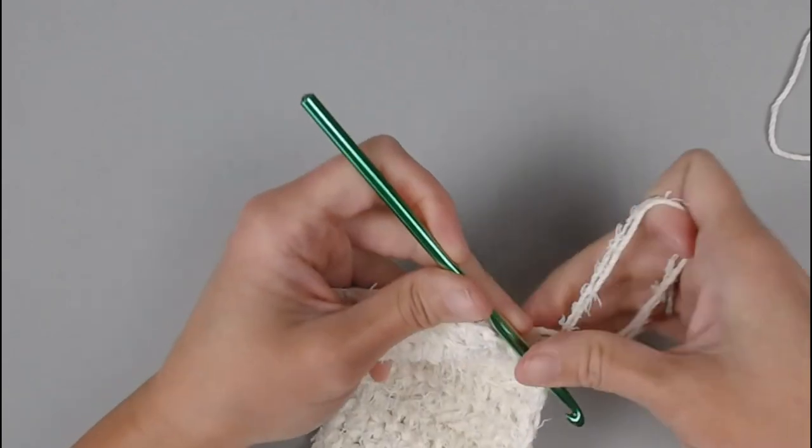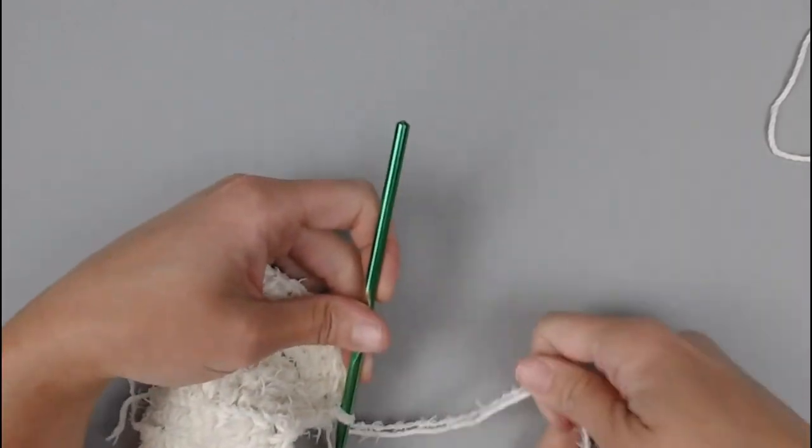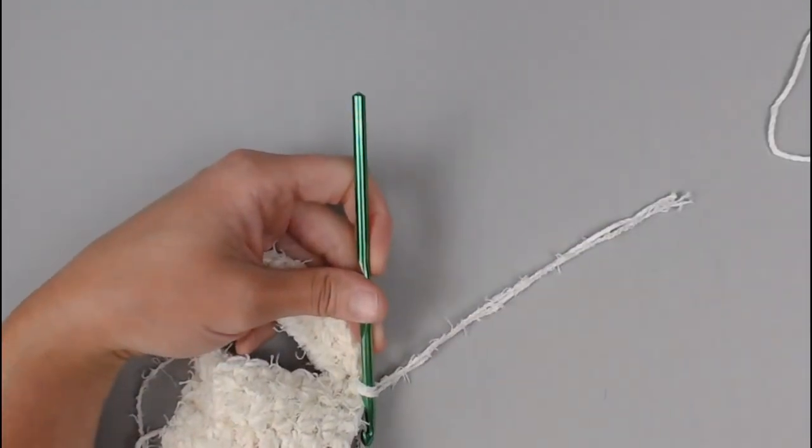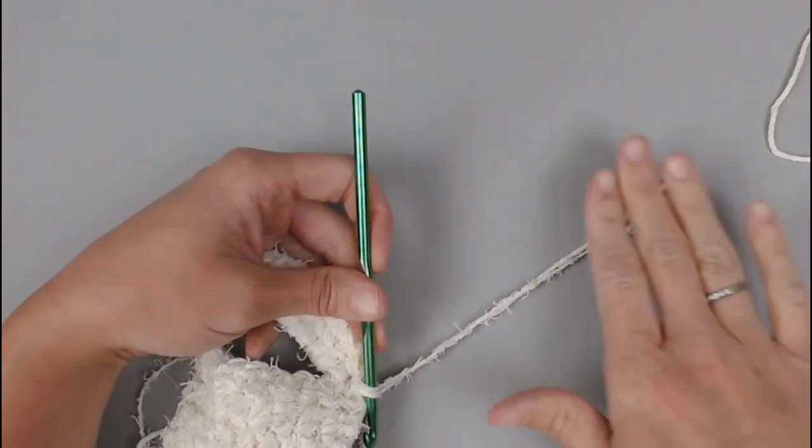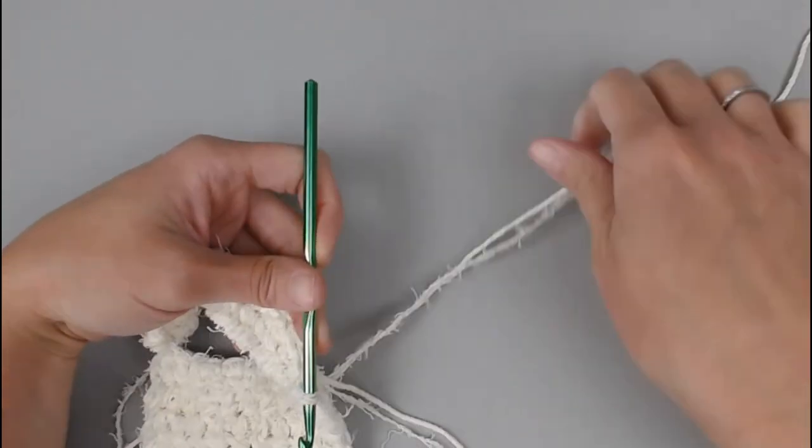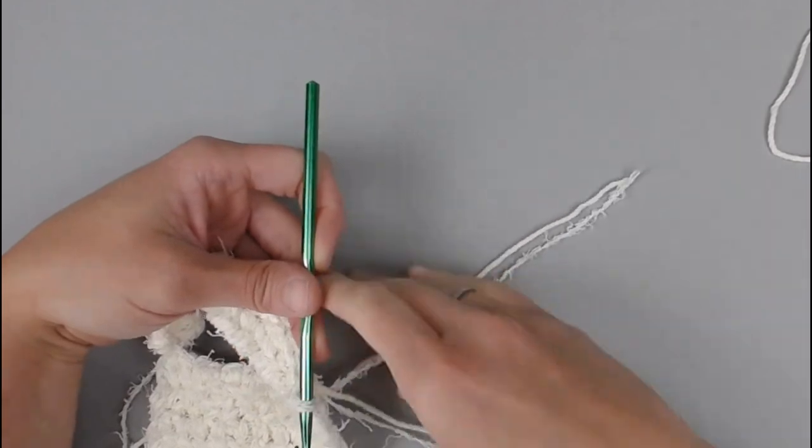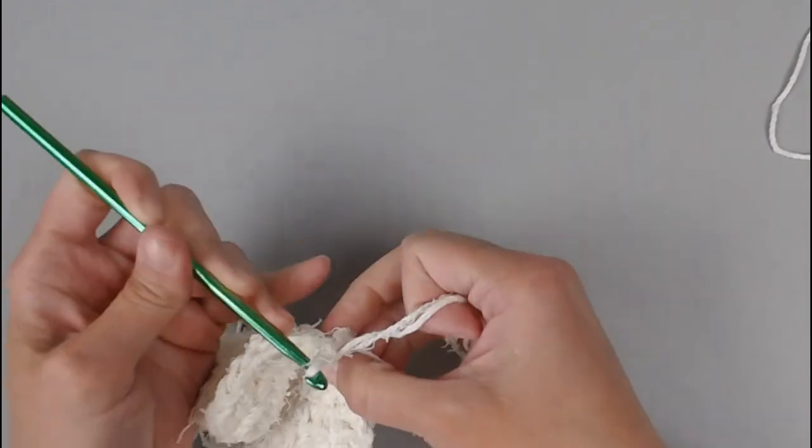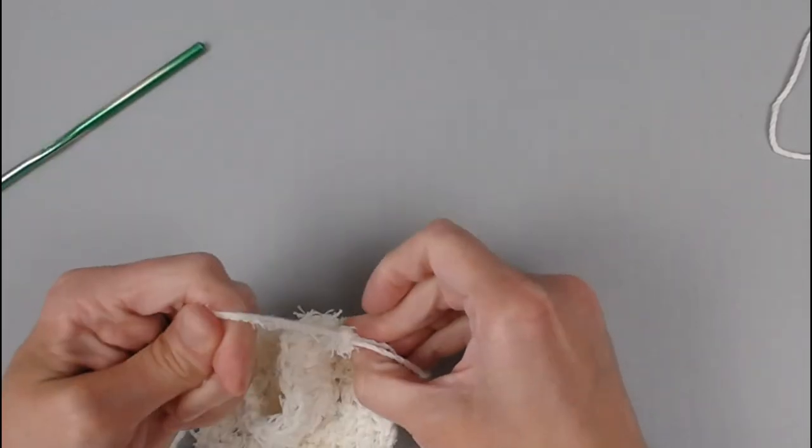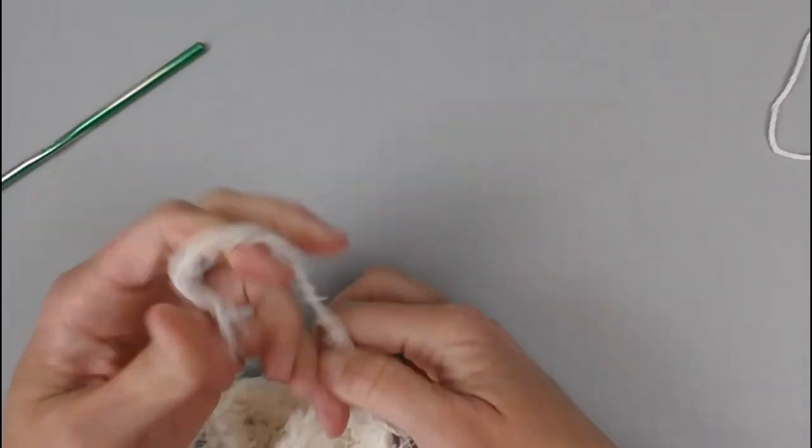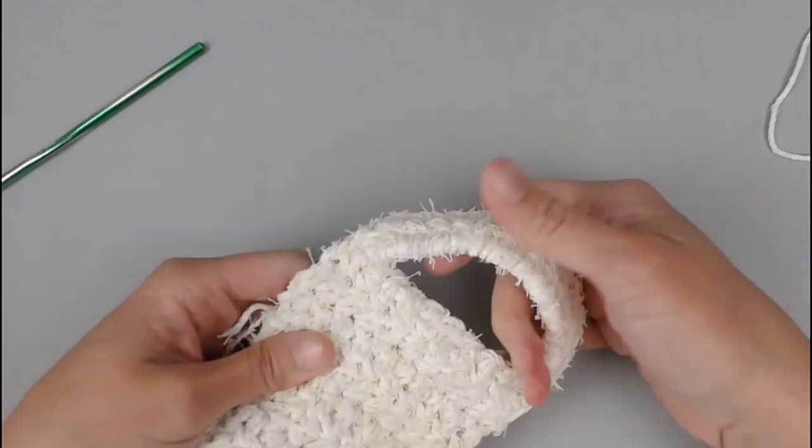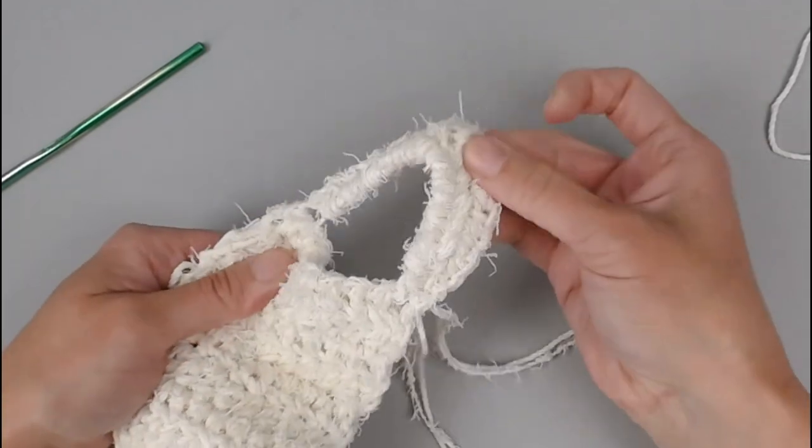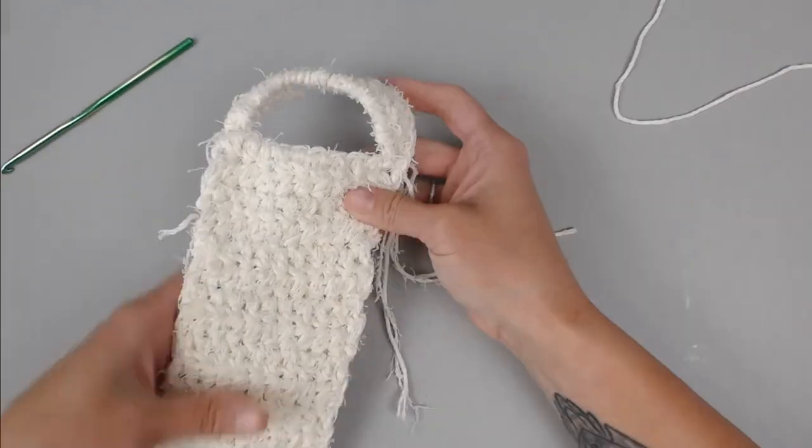Just like that. I've already cut off my yarn, leaving myself a long enough tail. Wanted to actually work this project before I showed it to you. That is why this work is already cut. So all you have to do is yarn over those tails, pull them through the loop on your crochet hook, pull tight for a slip knot. And that handle is now done, secure, and ready to go.